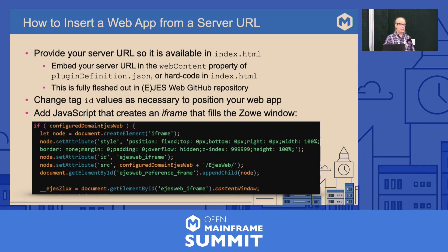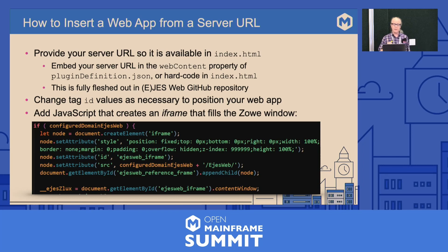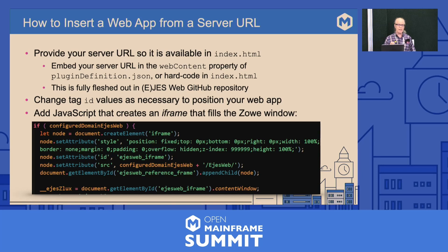If you're doing something like EJES web — a hosted web app — you can insert a web app from a server URL. You'll need to provide that URL in the index.html. You can use Zoe persistence, or insert it into the webContent property of the plugin definition.json file, or hard code it into the index.html. You can change tag values in the index.html to address that server URL, then add JavaScript that creates an iframe filling the Zoe window. You could hard code this too if all you need is to get it up and running.